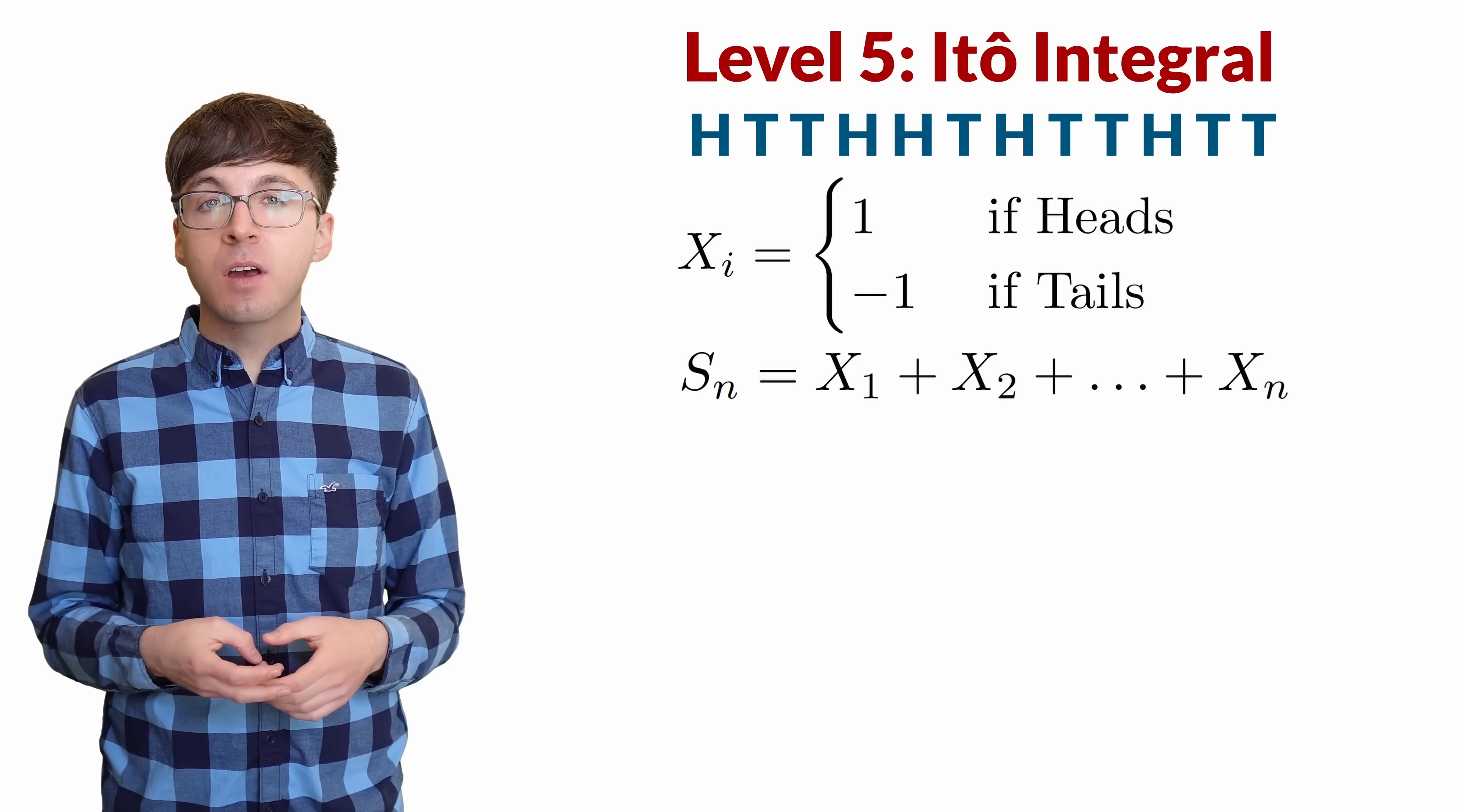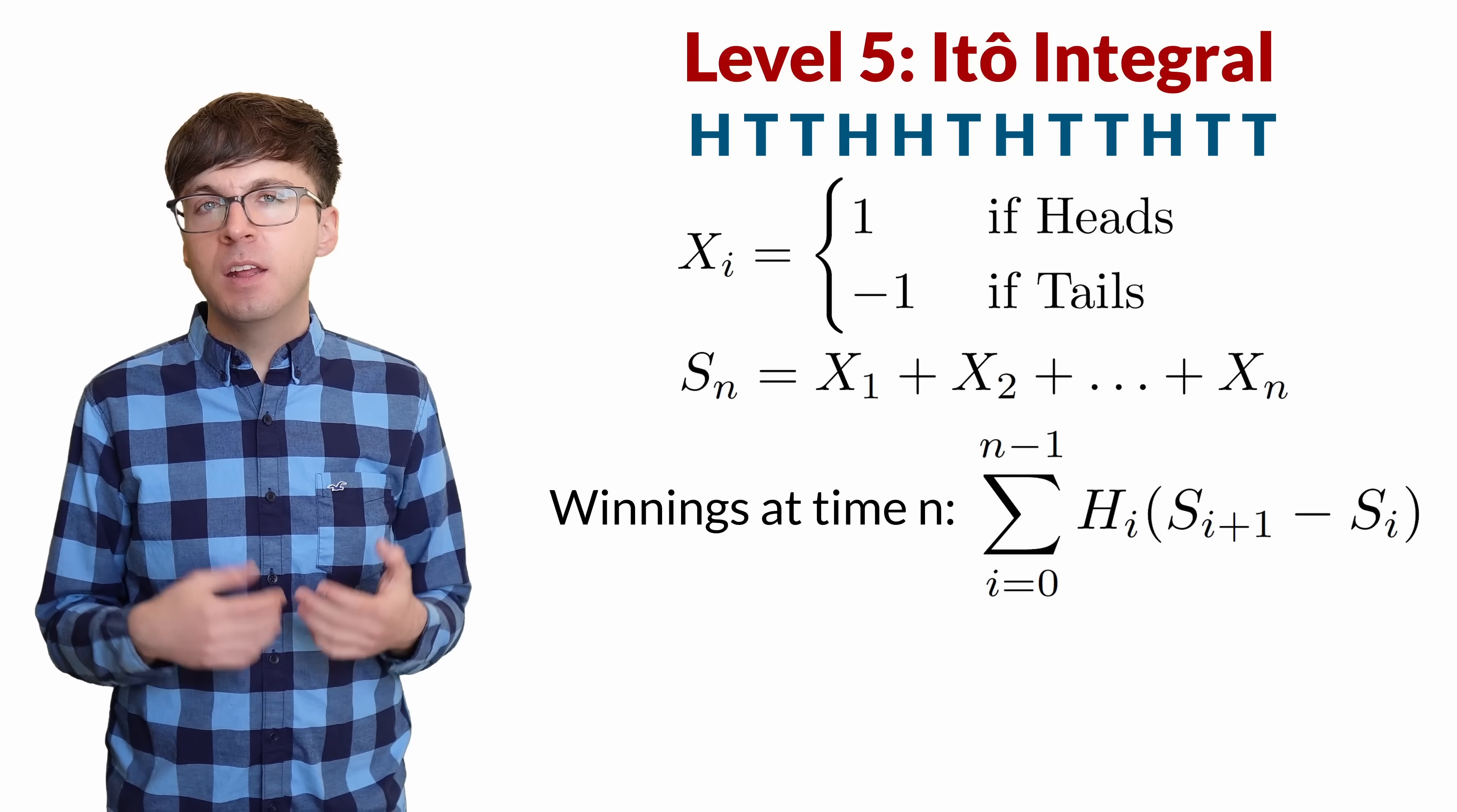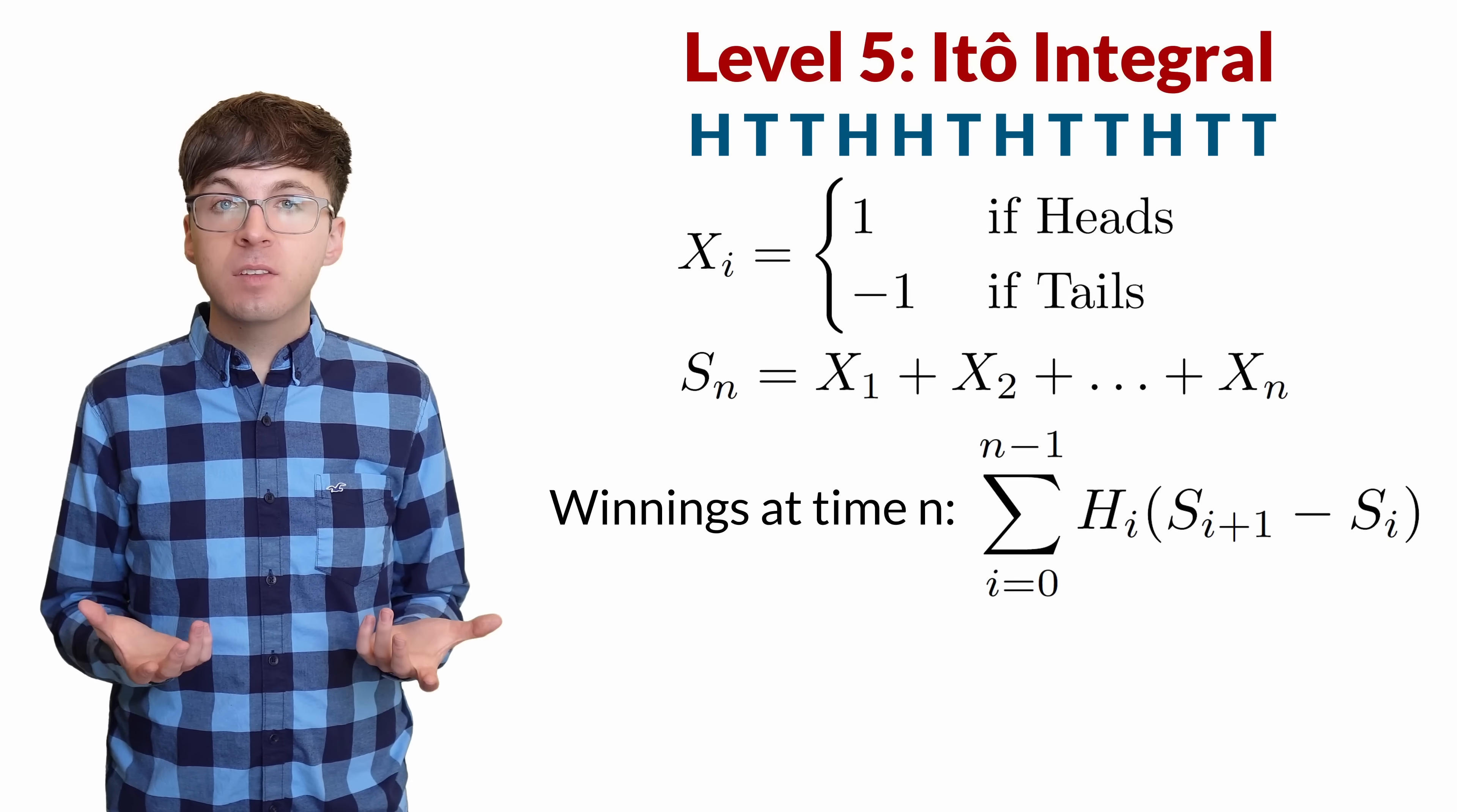Let S_N be the sum of the first N flips. This is called a simple random walk. The amount that you win or lose up to time N can be written as the sum of H_i times (S_i+1 minus S_i). The sum of your bet times the result of the flip. Does this look familiar? This is very similar to the Riemann-Stieltjes integral. But now we're integrating with respect to a random function S_N.